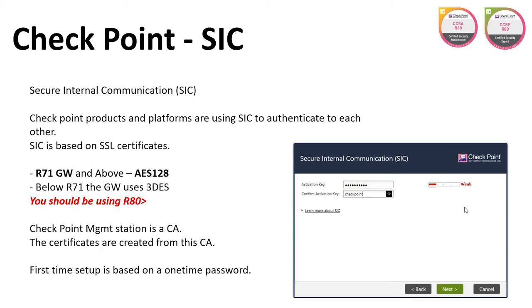For R71 gateways and above, we use AES128. For gateways below R71, it's Triple DES — but you should be running R80 anyway, so AES128. When we install the gateways, we put in a one-time password to connect the gateway and management, and after this one-time password is used, the rest of the communication uses certificates.